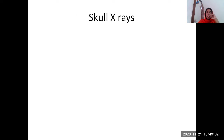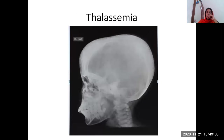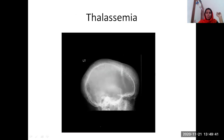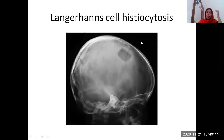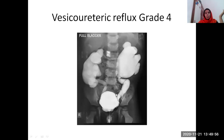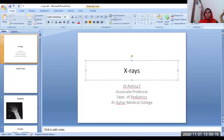The skull x-rays — the most commonly asked skull x-rays are nothing but about thalassemia, which shows the hair-on-end appearance. Another x-ray of Langerhans cell histiocytosis shows single or multiple lytic bone lesions. Also, an image of MCU — micturating cystourethrogram — where after injecting the dye you see a very dilated renal pelvis and ureter. The obliteration is so much — it is a grade-four vesicoureteric reflux.